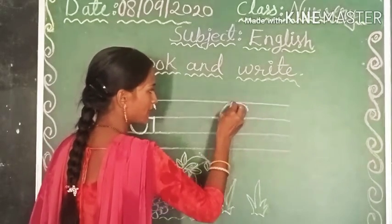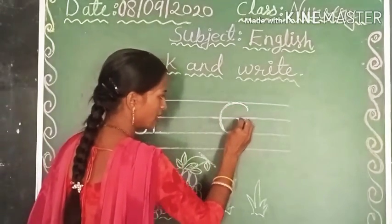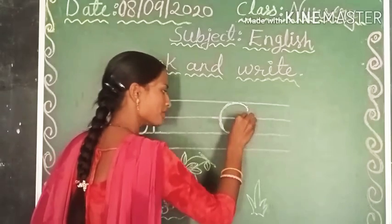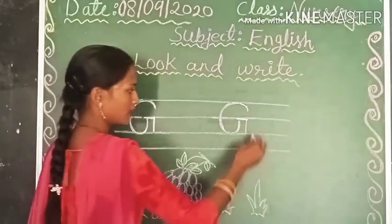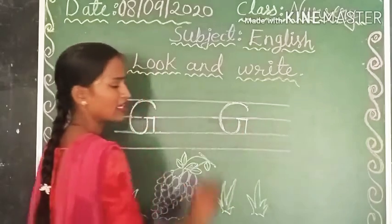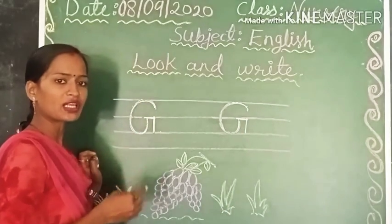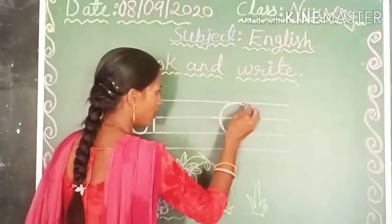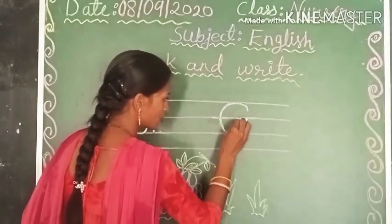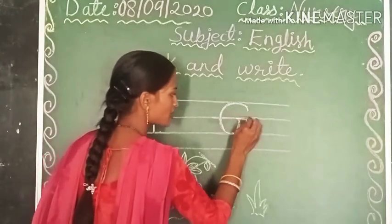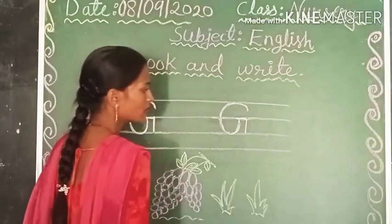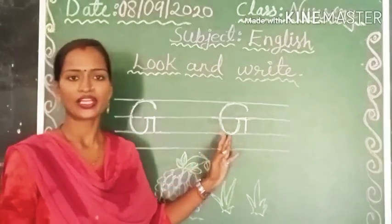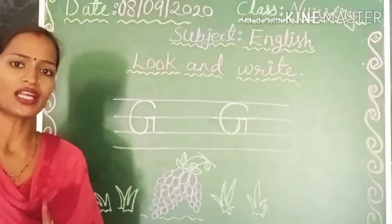देखिए, मैंने बना लिया circle। उसके बाद हम बनाएंगे sleeping line। आपको इसमें सिर्फ तीन steps करने हैं: पहला यह हो गया curve, जो second line पर है। उसके बाद यह हो गई sleeping line। उसके बाद standing line। यह बन गया आपका capital letter G। क्या बन गया? Capital letter G।